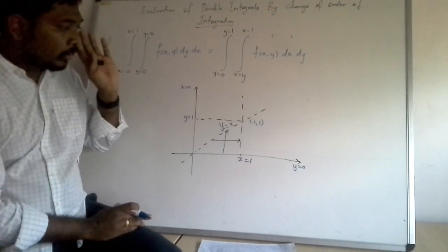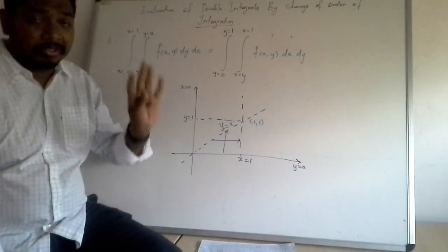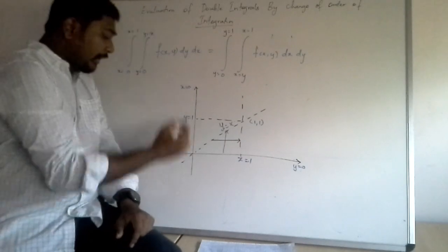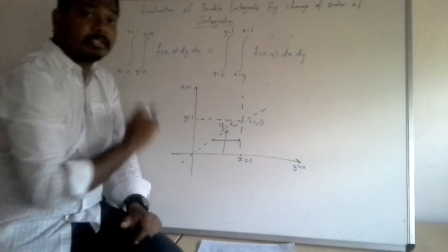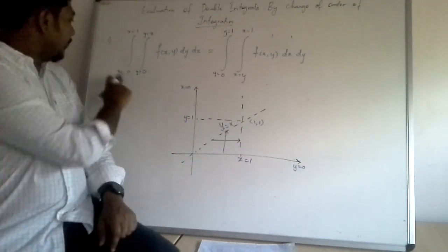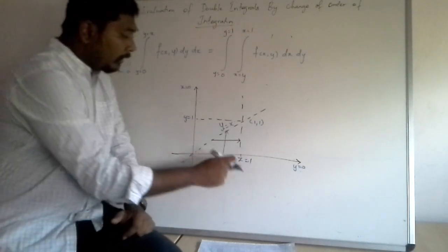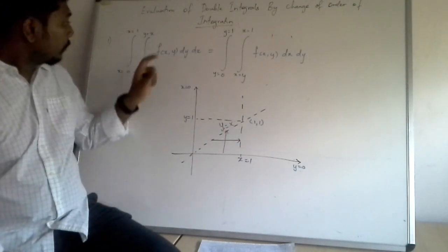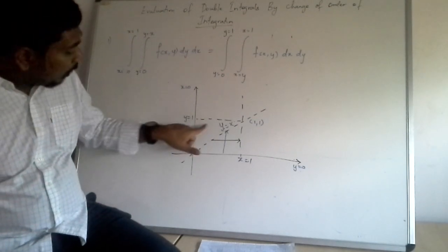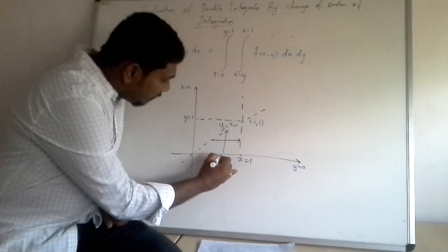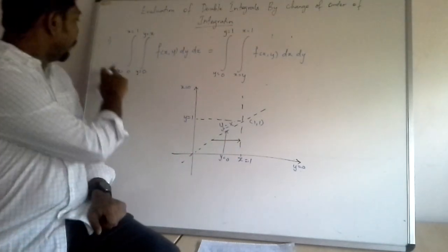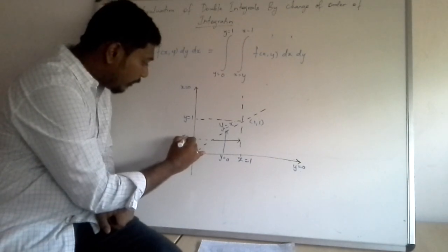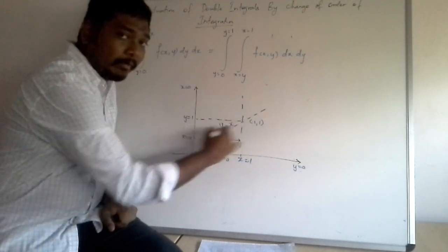We cannot change the order directly — when we change it, the limits should also change. The best way to approach problems in this method is to plot the graph. y = 0 is the x-axis, y = x is a line passing through the origin bisecting the first quadrant. x = 0 is the y-axis, and x = 1 is a line perpendicular to the x-axis and parallel to the y-axis. Because the inner integral is with respect to y, draw a line parallel to the y-axis from y = 0 to y = x, with x going from 0 to 1. This gives us the triangular region.